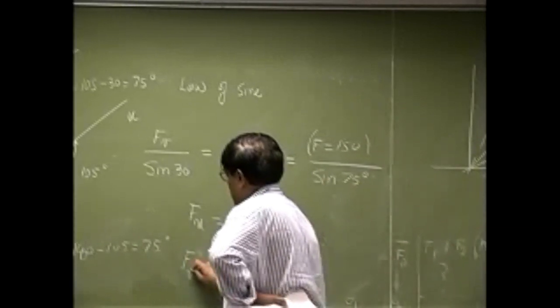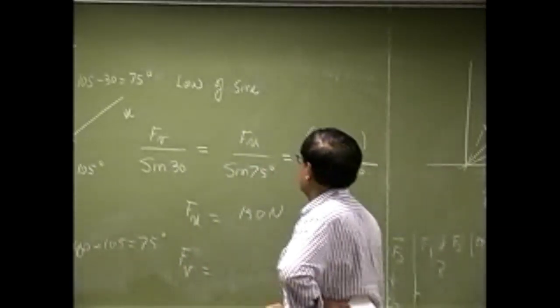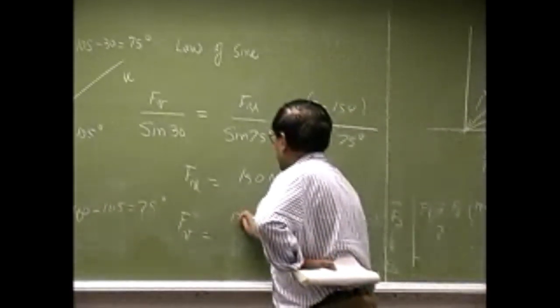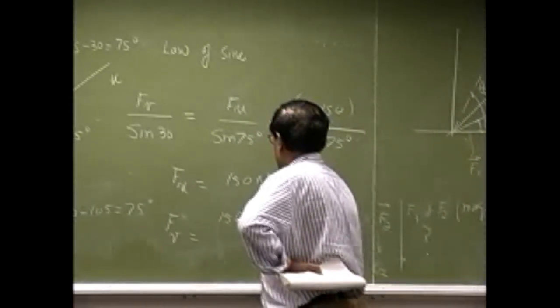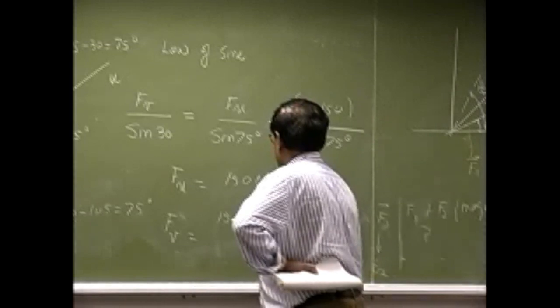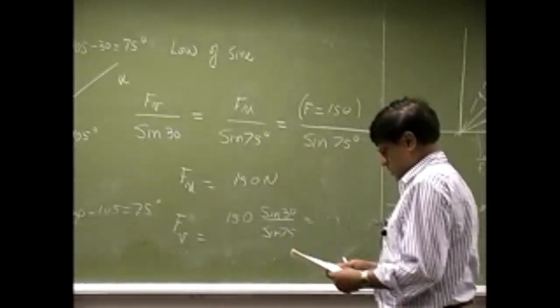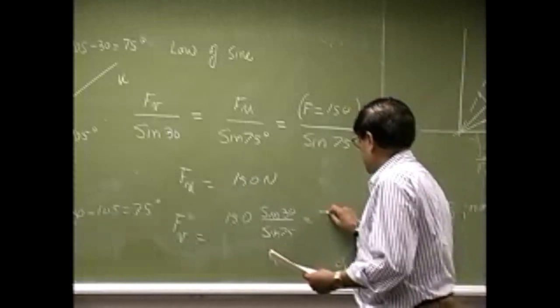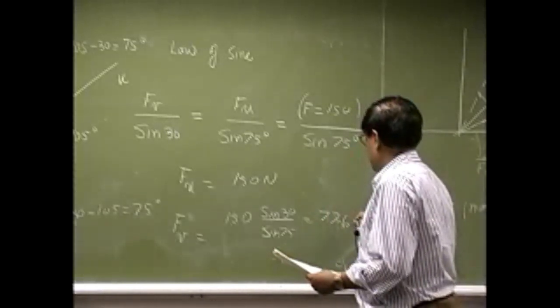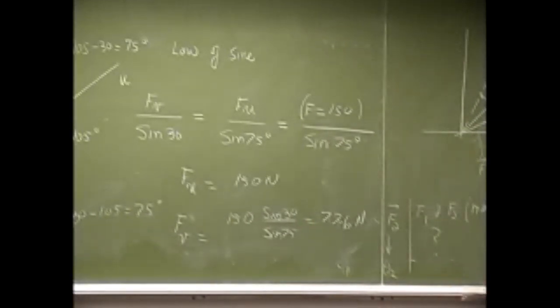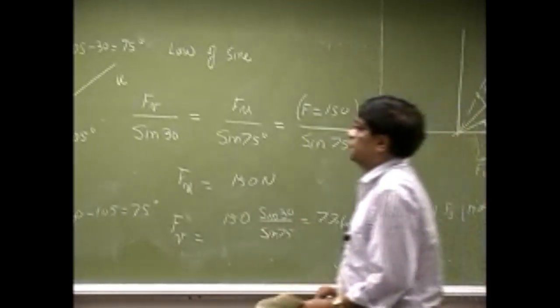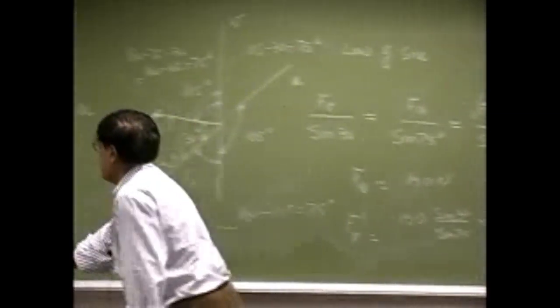F sub v will be 150 times sine 30 divided by sine 75. And that comes out to be 77.6 N. So those are the magnitudes for two of the components.